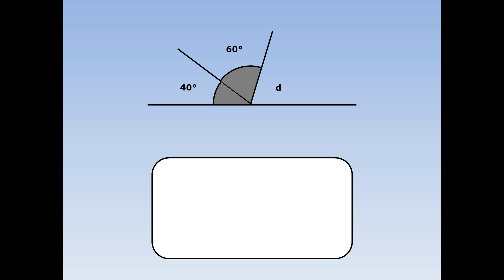On this straight line, we've got three angles. 40, 60 and D add up to 180 degrees. So to work out what D is, first of all I add up 40 and 60. That equals 100. And then to work out D, I do 180 take away 100 equals 80. D equals 80.